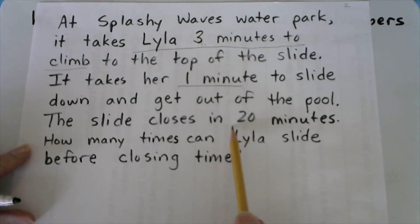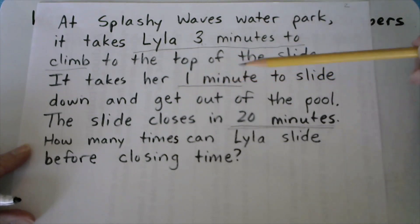How many times can Lila slide before closing time? So let's understand what we know, and then we can make a plan. We're going to underline that she takes 3 minutes to climb. So this 3 is an adjective which describes climbing minutes. It takes her 1 minute to slide. So this number is an adjective that describes sliding minutes. The slide closes in 20 minutes. This number represents how much time she's got to squeeze in as many slides as possible.